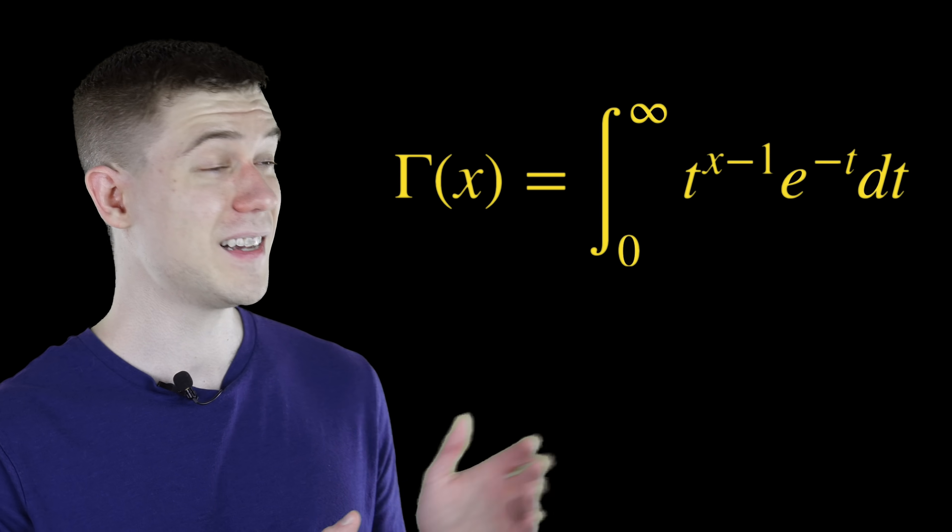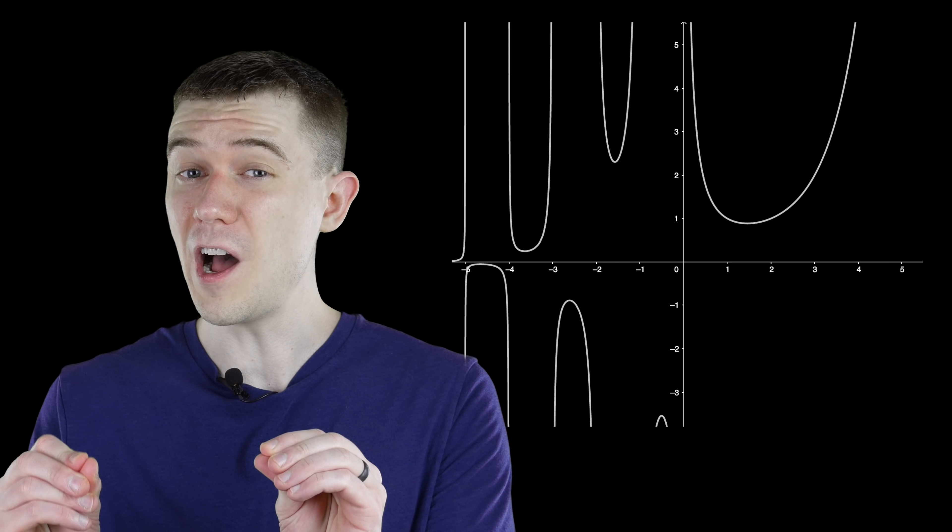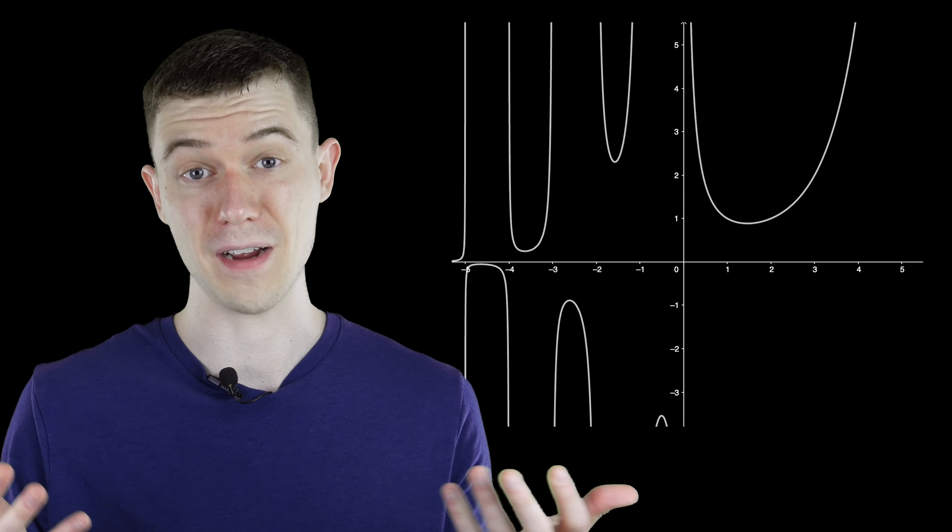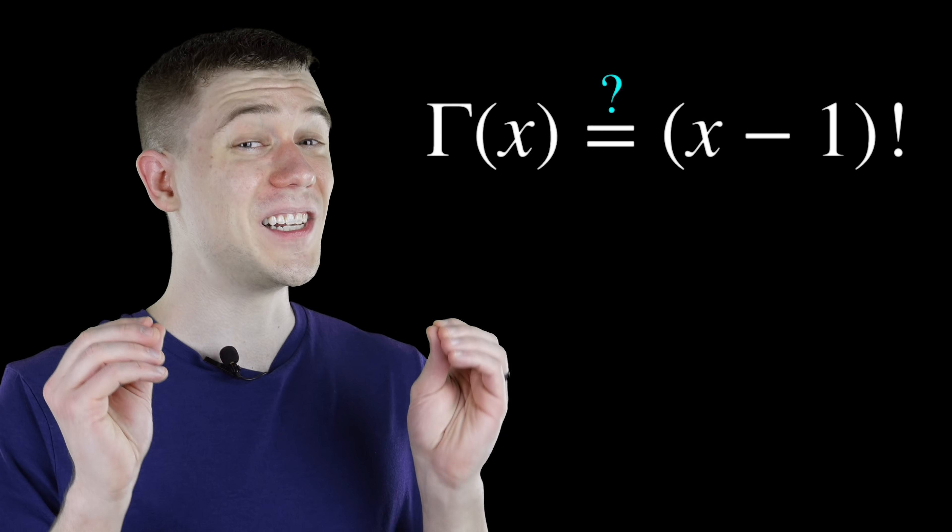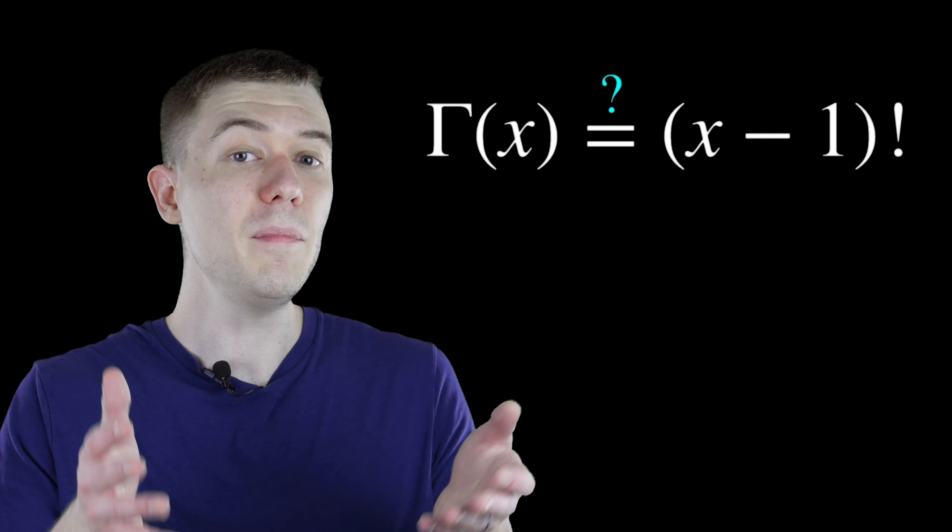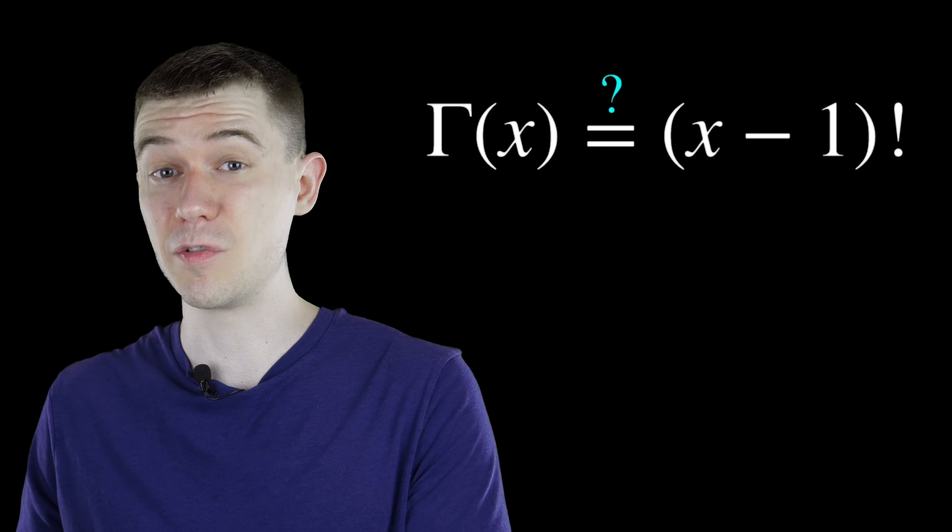Typically, we define gamma of x as this improper integral, and its graph looks an awful lot like it does indeed connect all of those points created by n factorial. But maybe you're not convinced that this actually is x factorial. Gamma of x is equal to x minus 1 factorial.